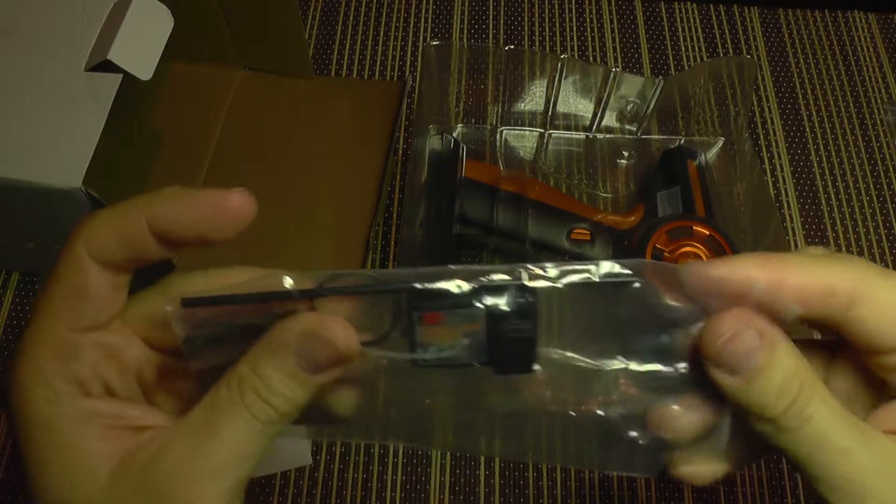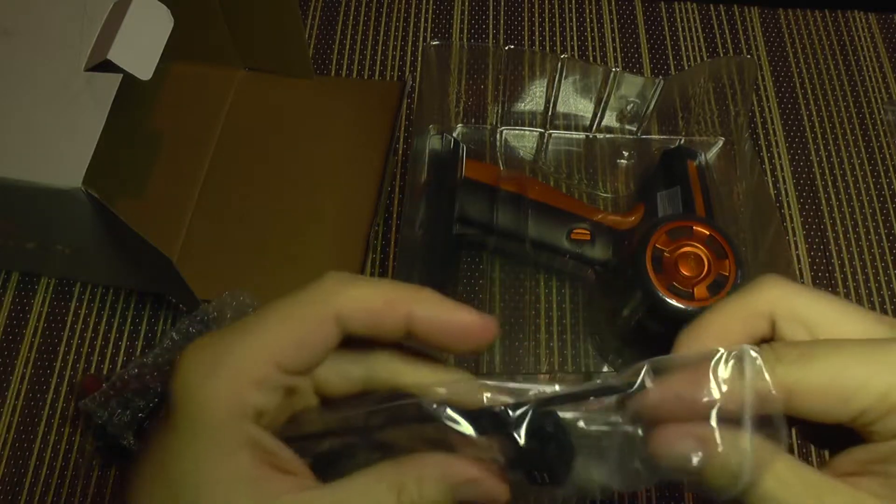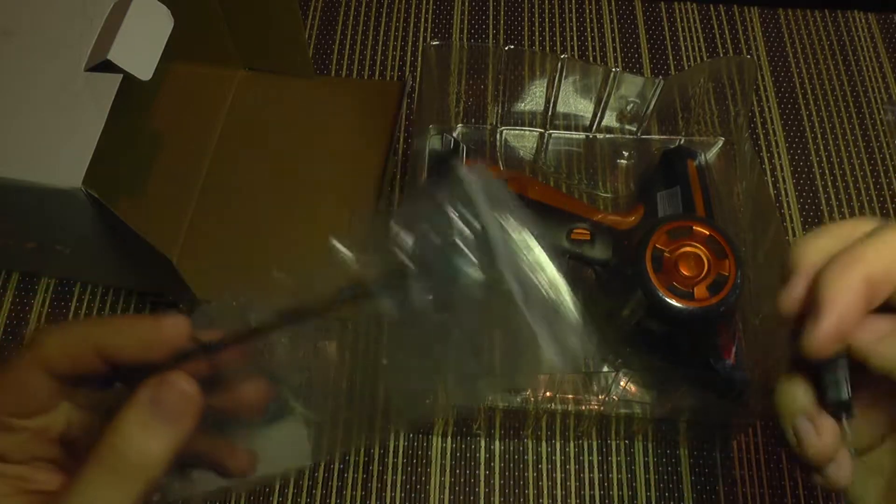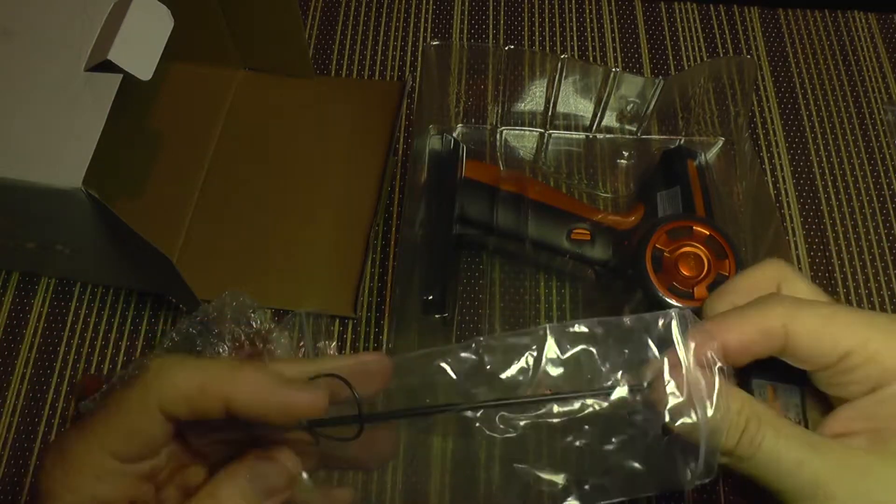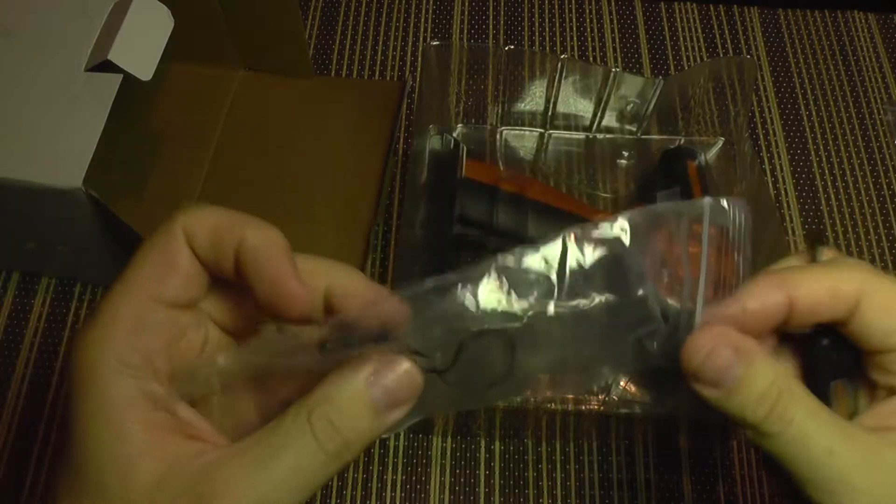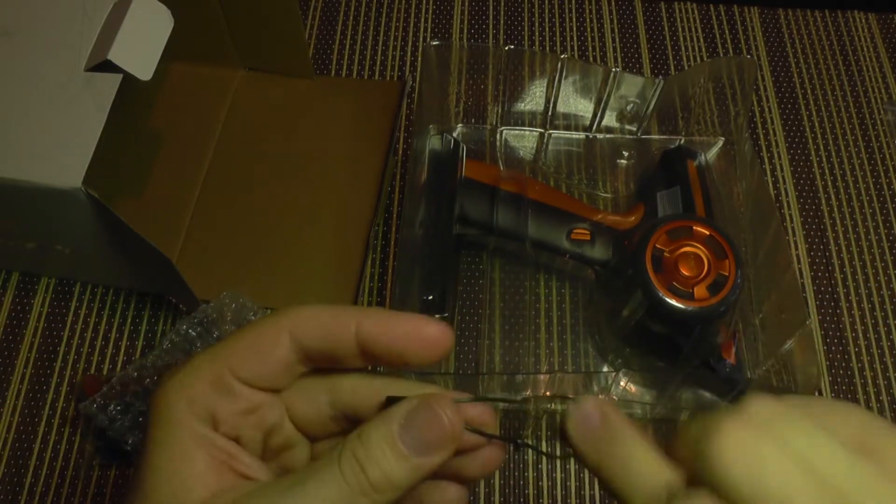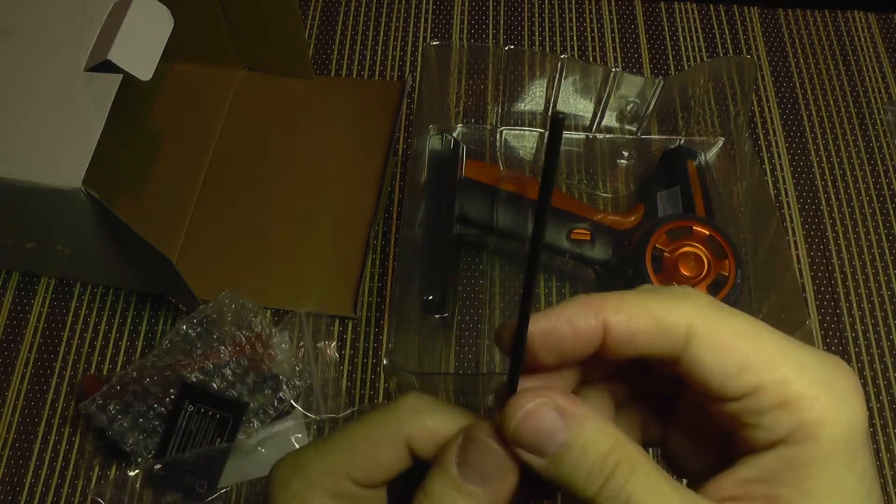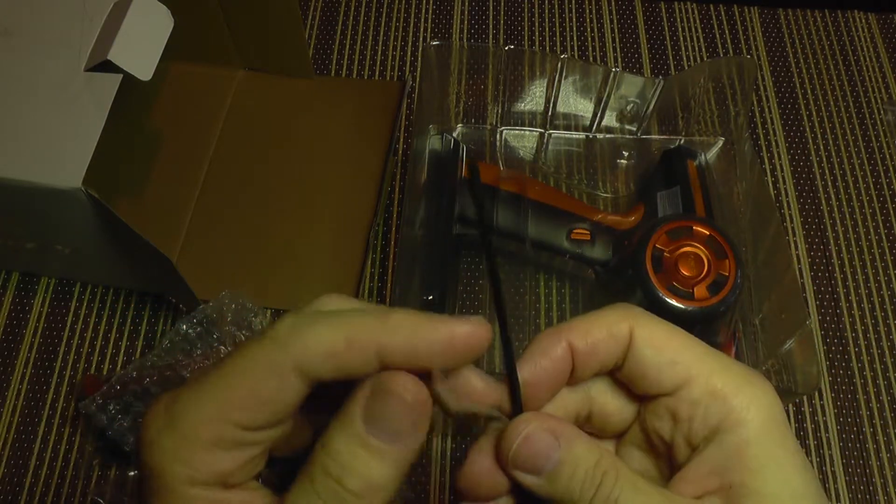Also it comes with a receiver. The receiver is with three channels. It has a long antenna. It has also a beam plug and this plastic thing is for protecting the antenna wire.